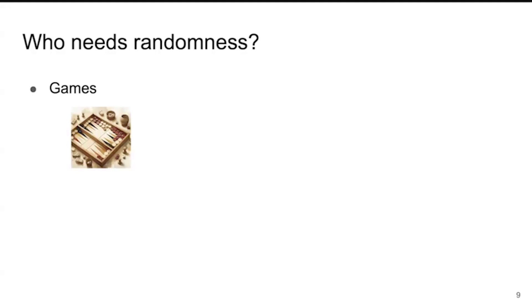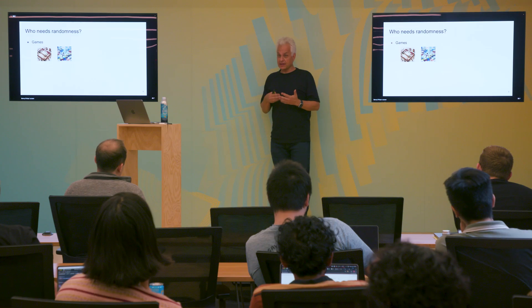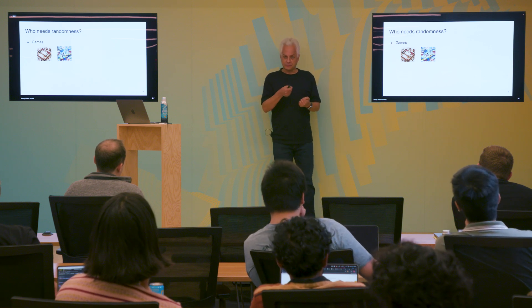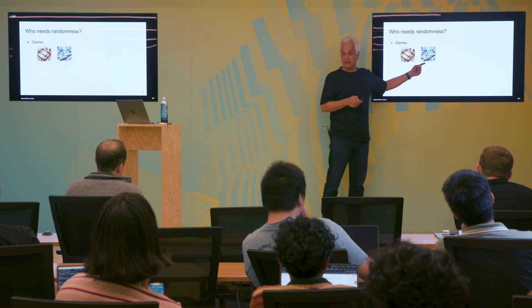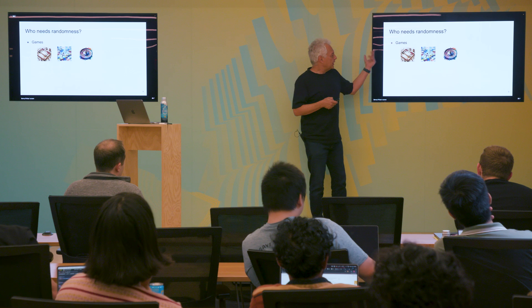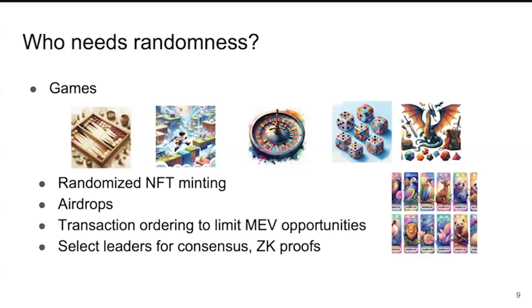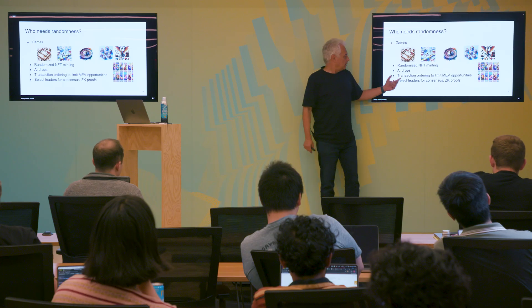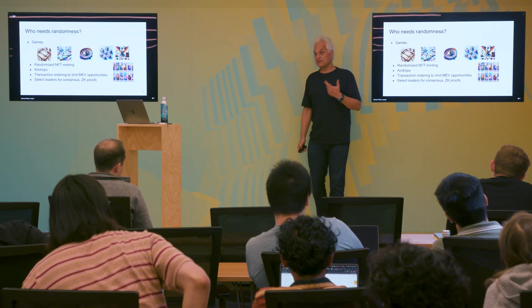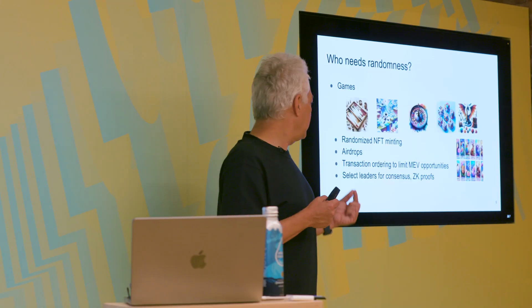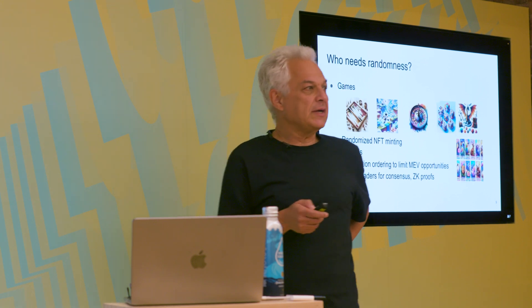What's the motivation for randomness on chain? Games are serious business - backgammon requires dice, arcade games need players to know enemies play randomly. There's randomized NFT minting where some NFTs are much more valuable, airdrops, transaction ordering to limit MEV opportunities, and cryptographic applications like selecting leaders for consensus and zero-knowledge proofs. For ZK proofs using sigma protocols and the Fiat-Shamir heuristic, the prover can post a commitment on-chain and use the randomness generated on that block as its challenge.